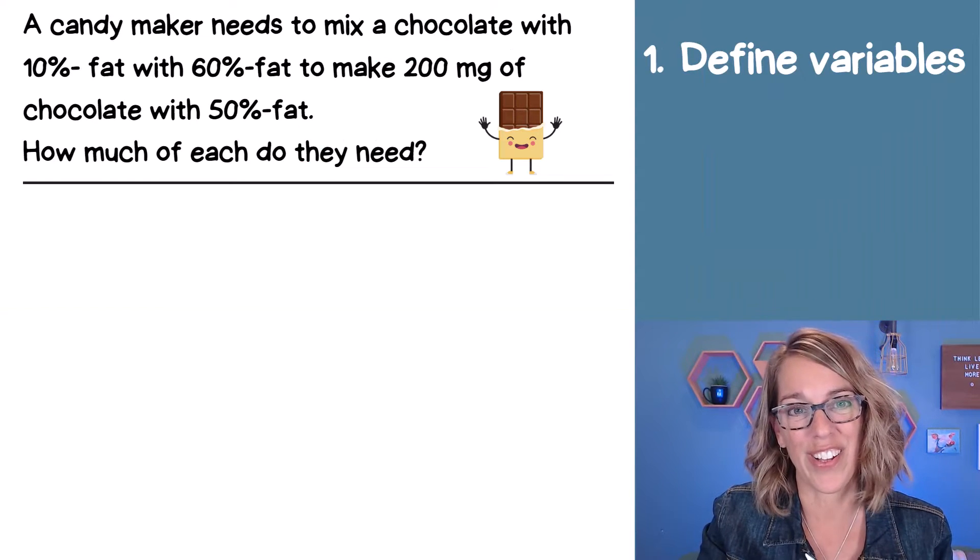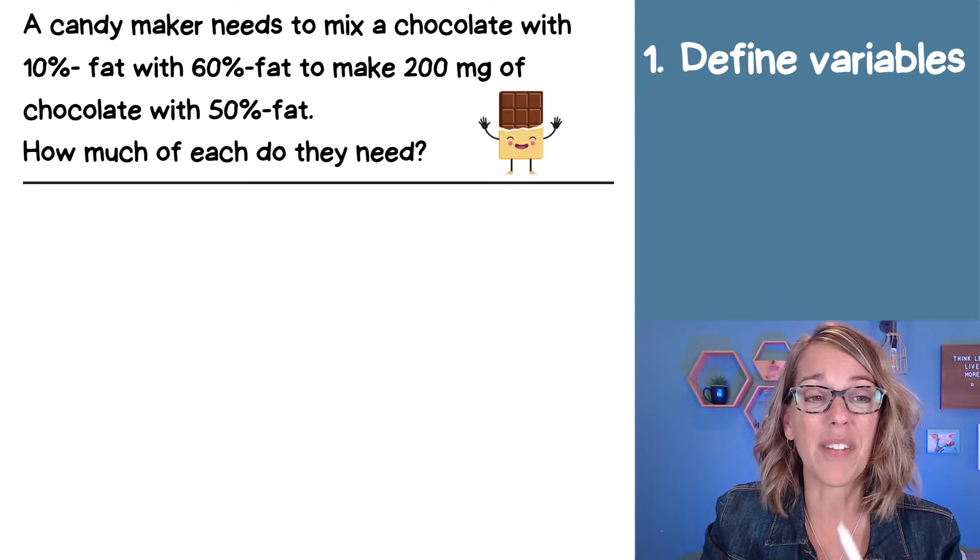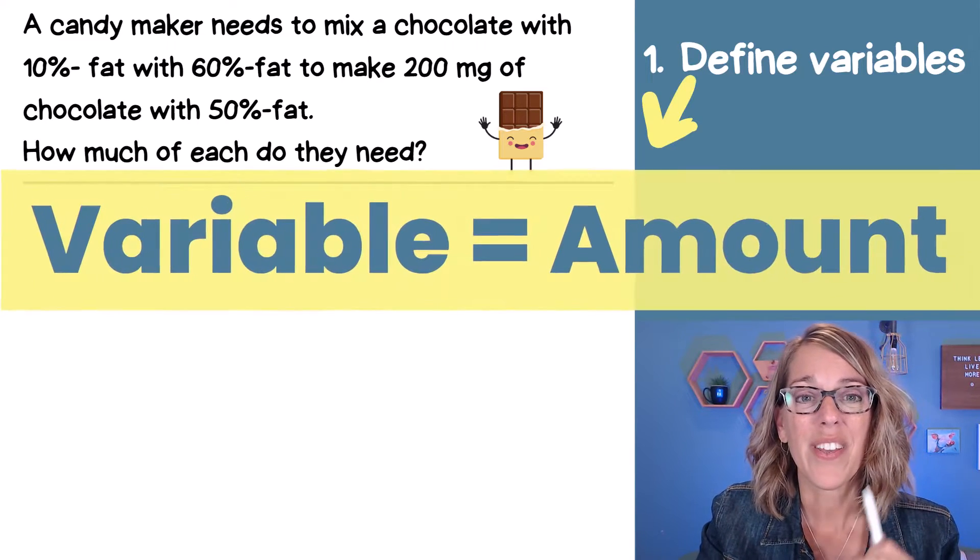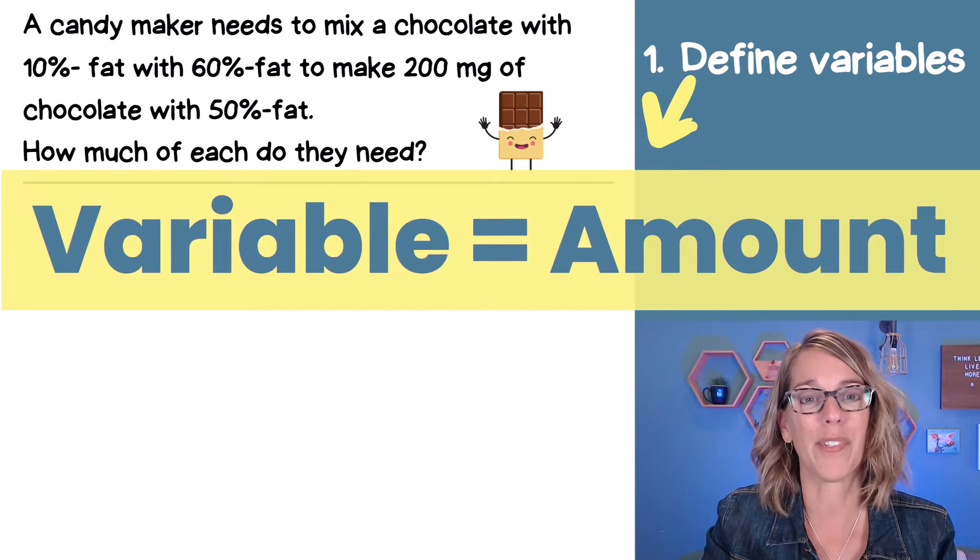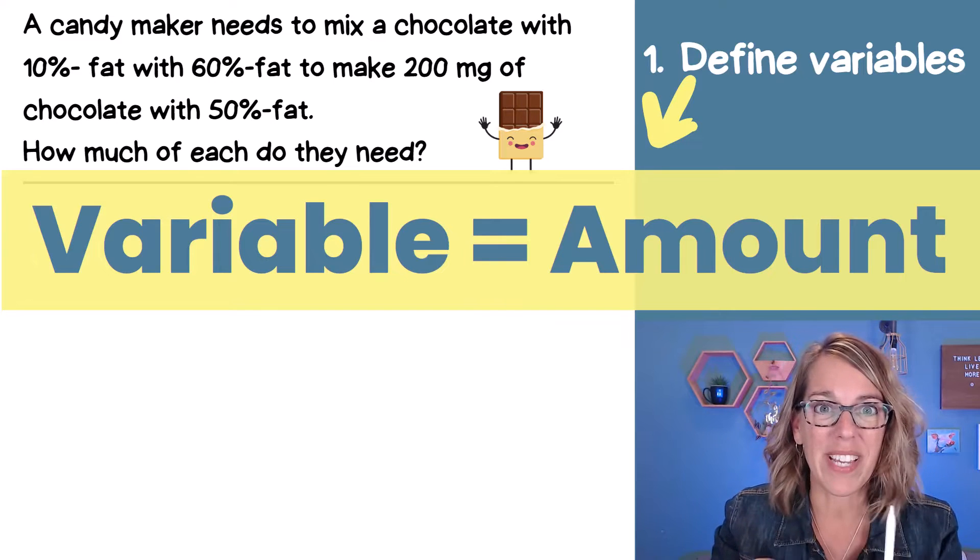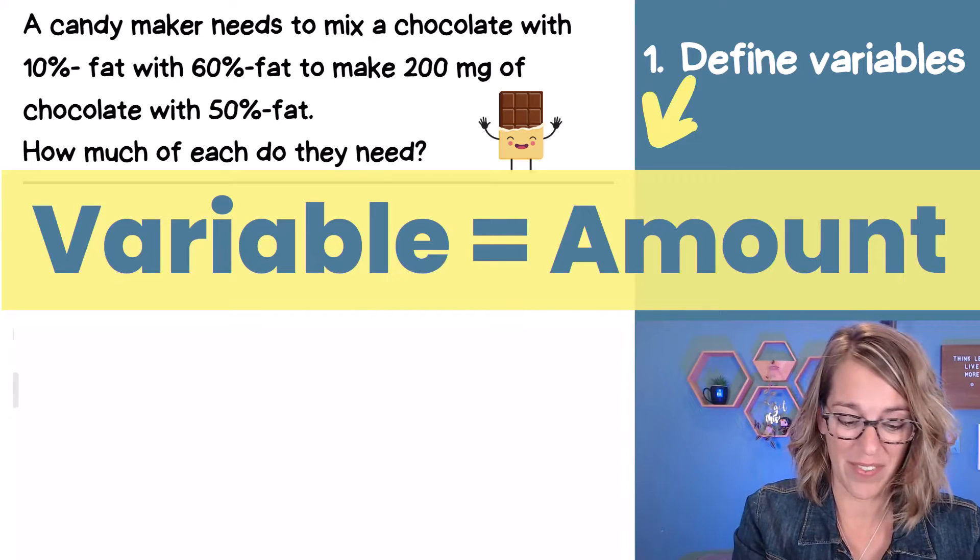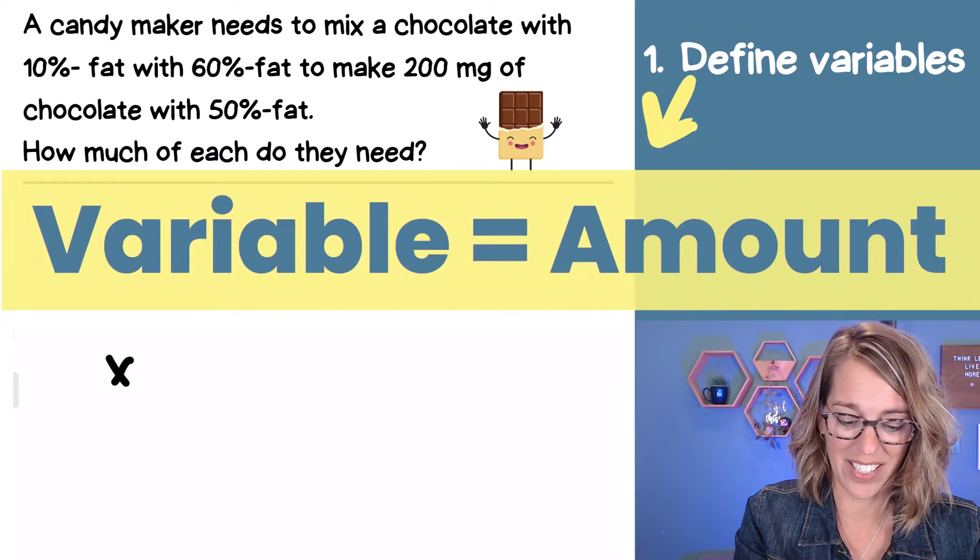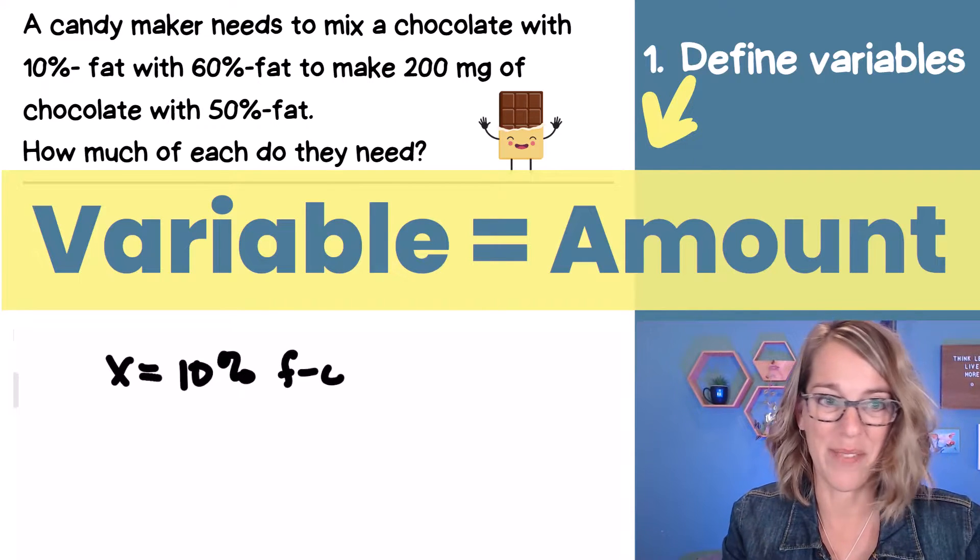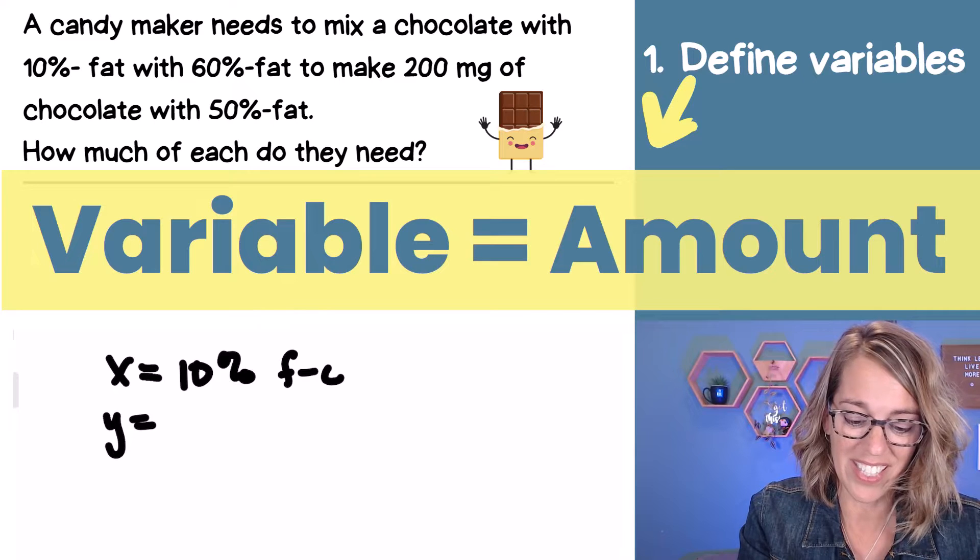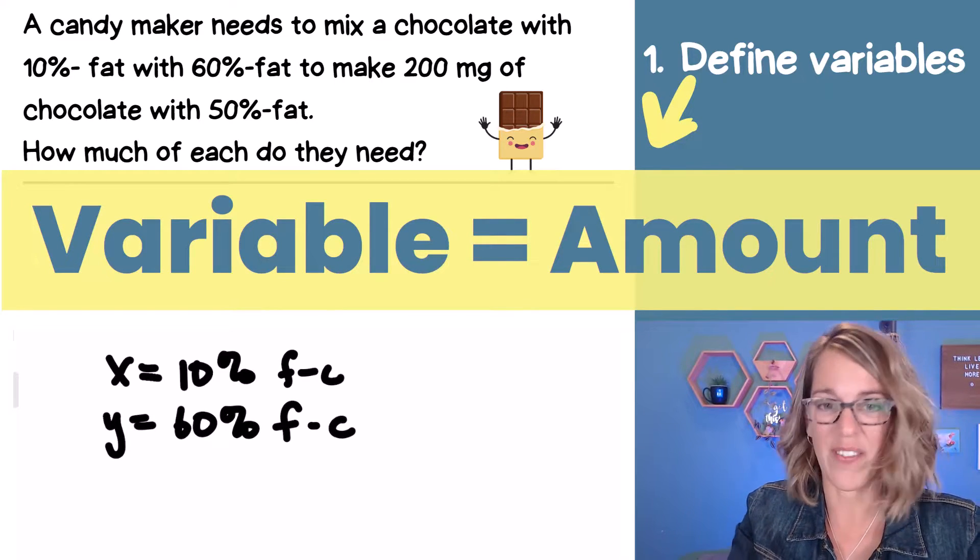Let's start with this chocolate example. I'm Angie and I'm going to make this as easy as possible starting with defining our variables. Those variables are the amounts. So when I'm deciding what my variables are going to be, I'm thinking about what am I mixing together. And in this case, I am mixing a 10% fat. So I'm going to call that X.